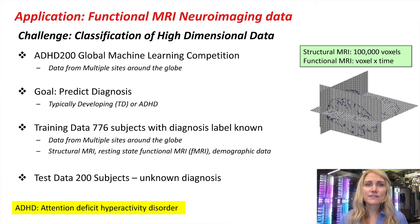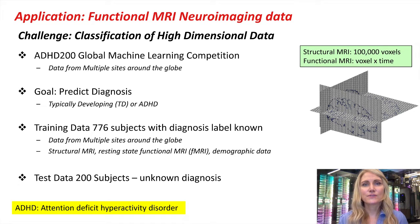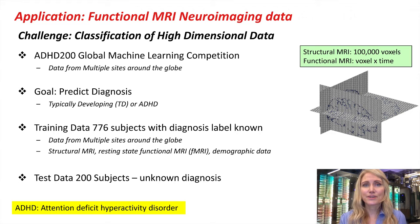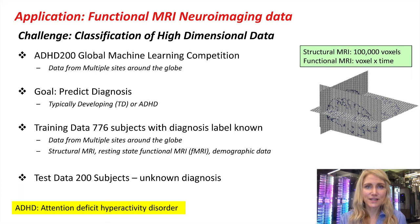The goal of this competition was to predict a subject's diagnosis as either typically developing or ADHD using a combination of demographic and structural and functional neuroimaging features. A number of sites from around the world collaborated to provide data, resulting in approximately 800 subjects' worth of data in the training set, as well as 200 subjects' worth of data in the test set, where the diagnosis was unknown to the participants.